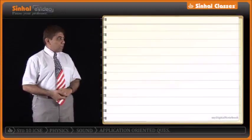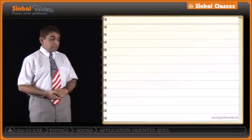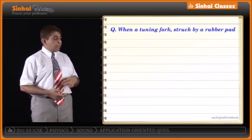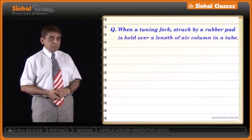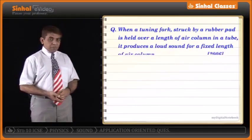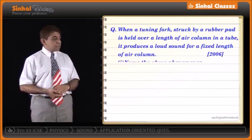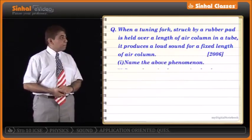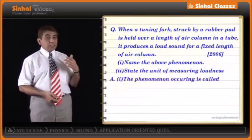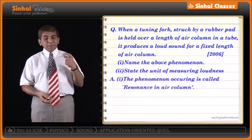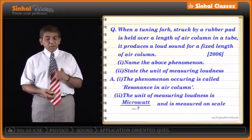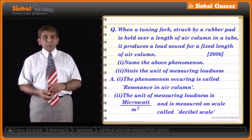When a tuning fork is struck against a rubber pad and held across a length of air column in a tube, it produces a loud sound. The phenomenon is resonance in air column. They also ask for the unit of loudness. Loudness is not a measurable quantity but a comparable one; however, when we quantify loudness, we get intensity, and the unit of intensity is microwatt per meter squared.